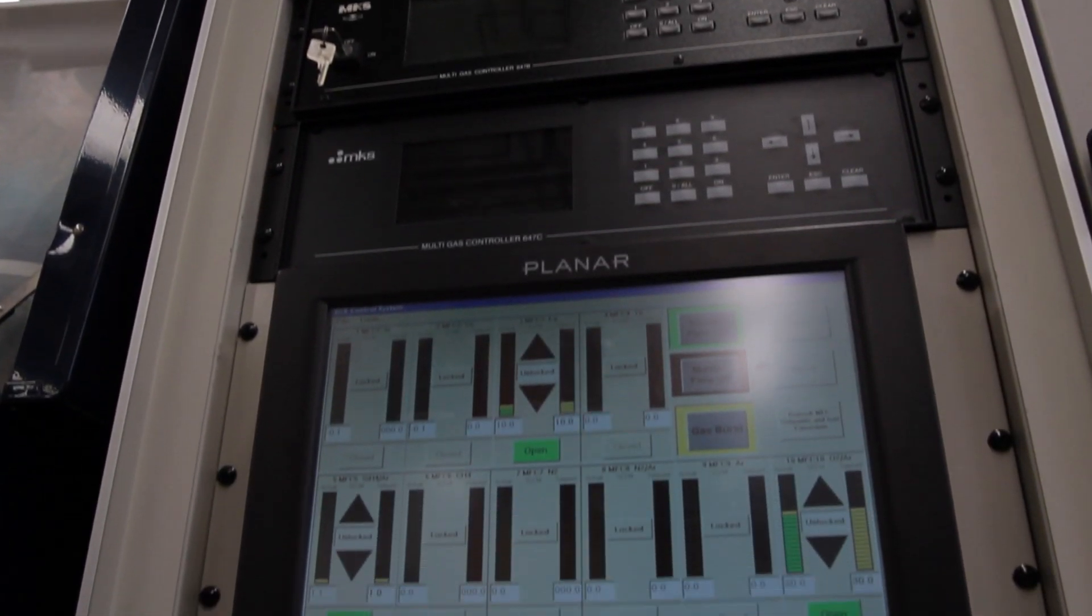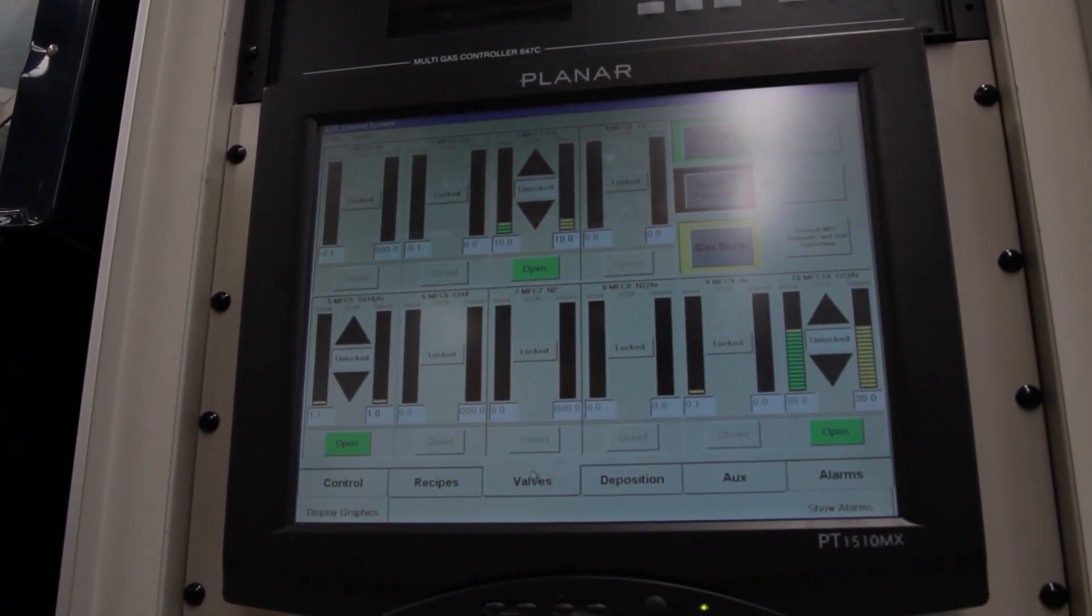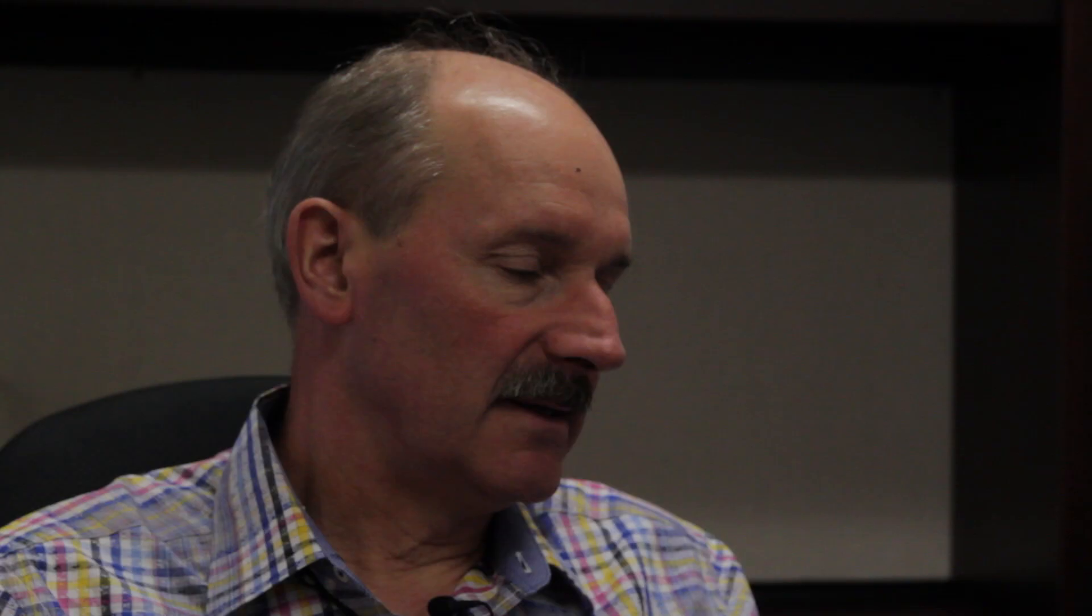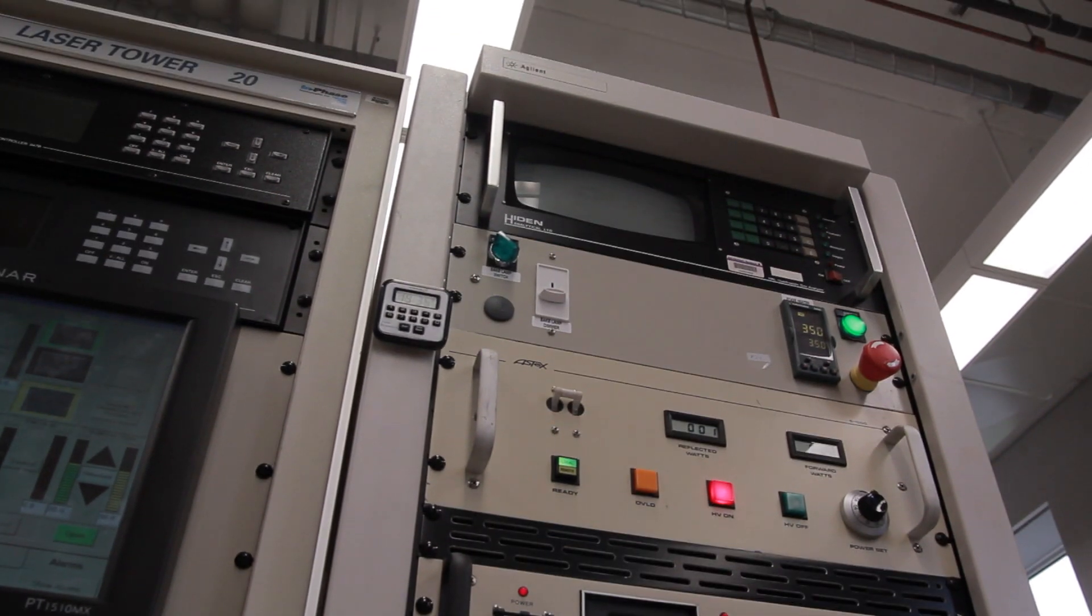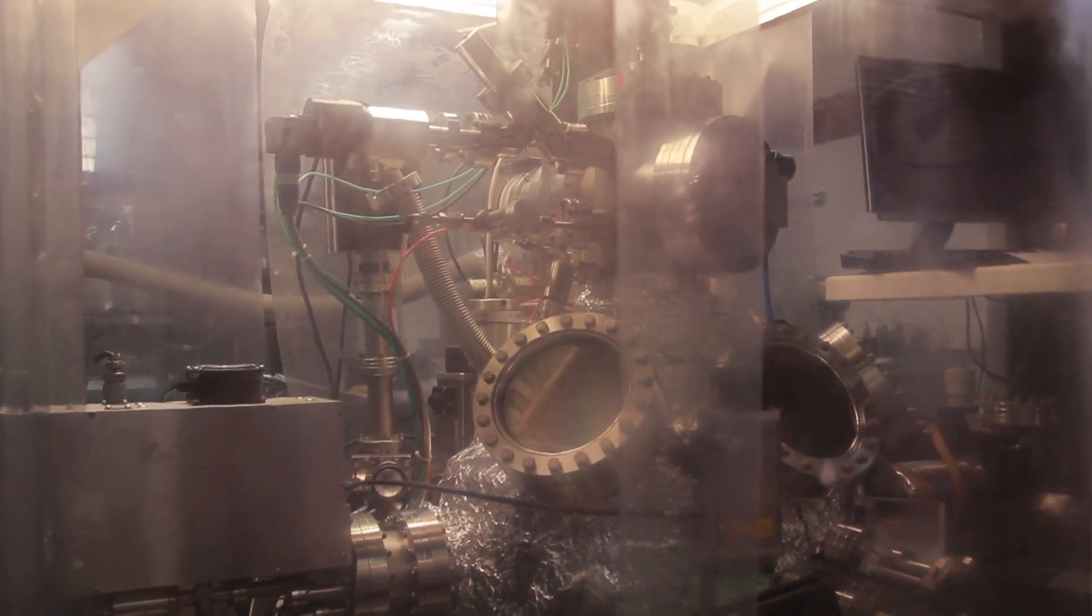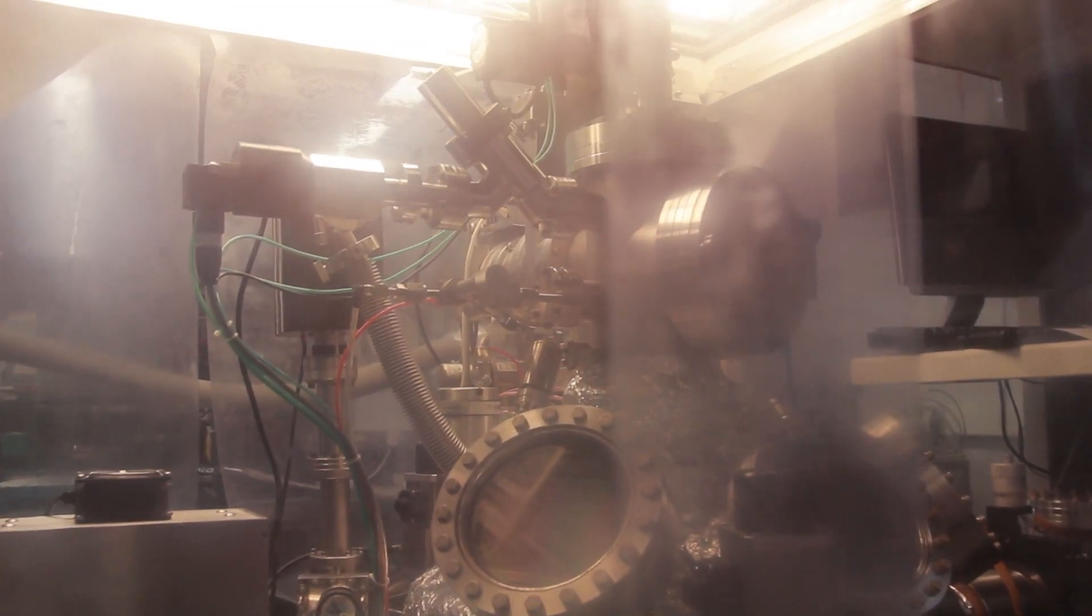Positron annihilation spectroscopy is a technique based upon the annihilation of a positron, which is the antiparticle to the electron. The details of this annihilation process can be used to analyze the structure of materials, and in particular we can analyze defects in the material structures and open volume.